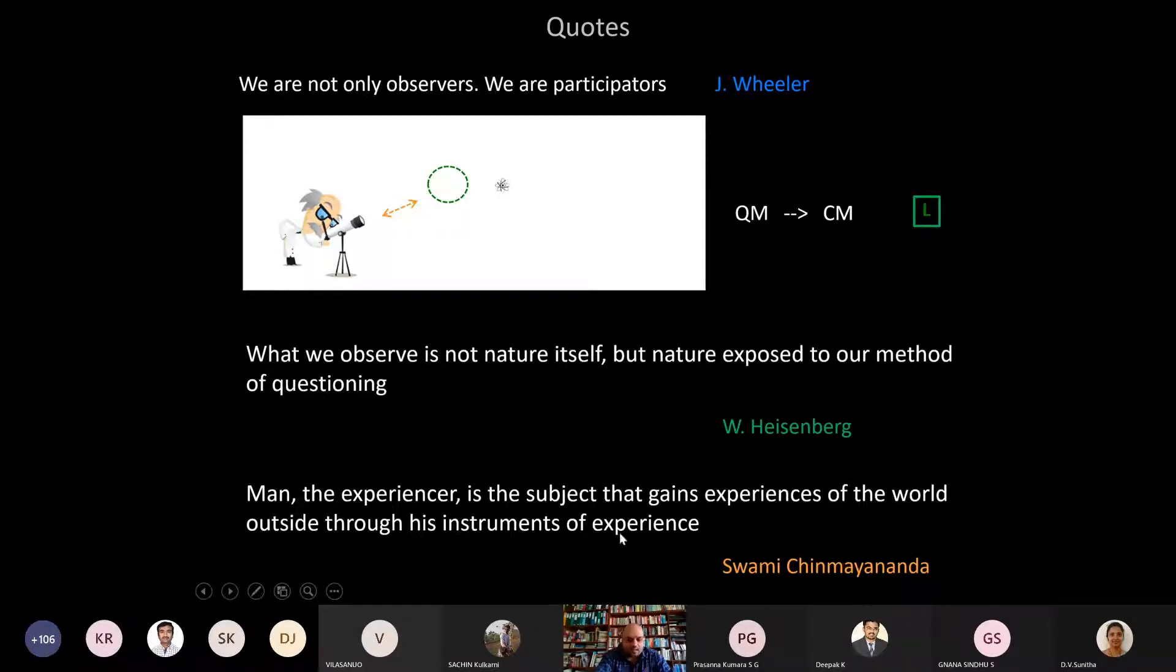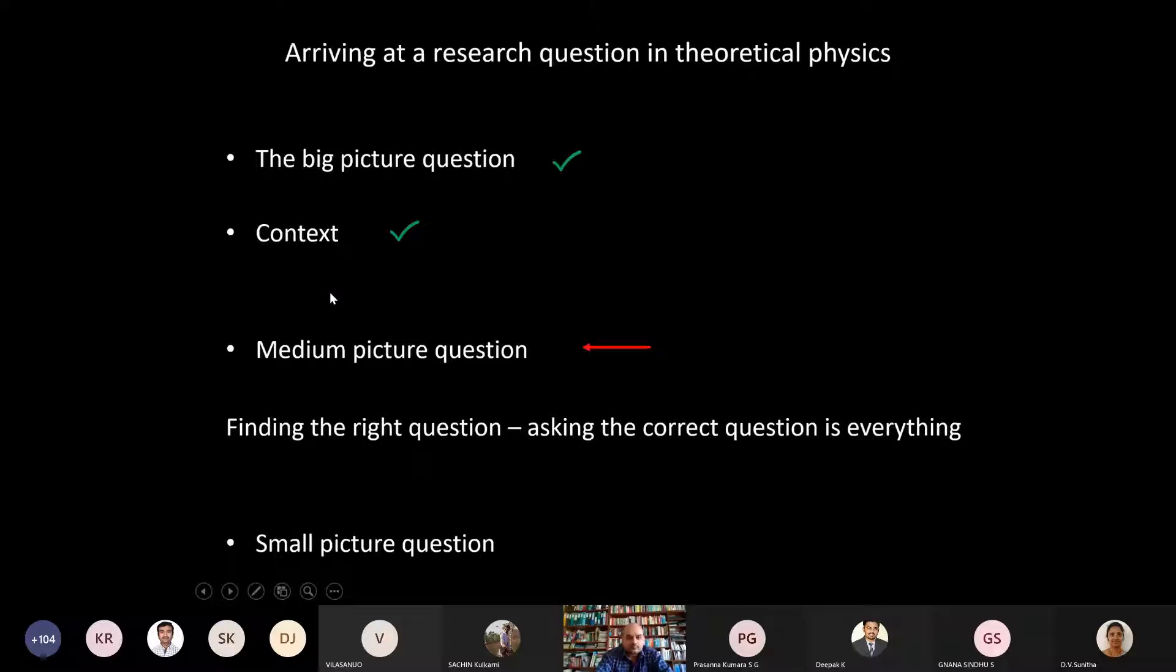What we observe is not nature itself, but nature exposed to our method of questioning by Heisenberg. And it's also interesting that you find similar lines in, say, articles by Swami Chinmayananda, where it said man, the experiencer is the subject that gains experiences of the world outside through his instruments of experience. So again, all of this refers to the fact that you are using something to observe the natural world. Okay, so I think that felt slightly off topic for a faculty development program. So let me get back to the main theme.